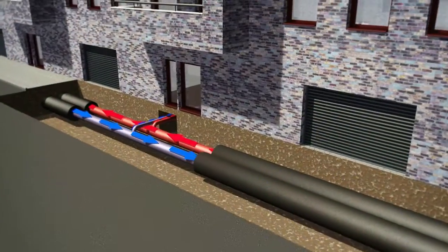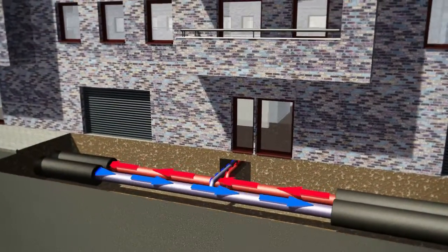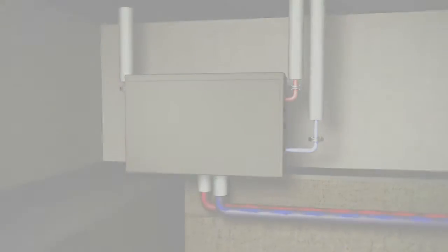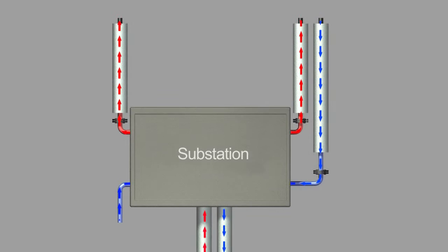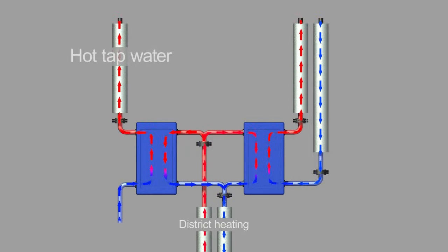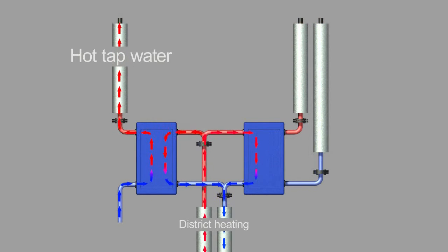Smaller diameter pipelines feed water into customer substations from the main pipes. At these substations, the district heating water passes through two heat exchangers. One heat exchanger is used for hot tap water, the other is used for heating the building.